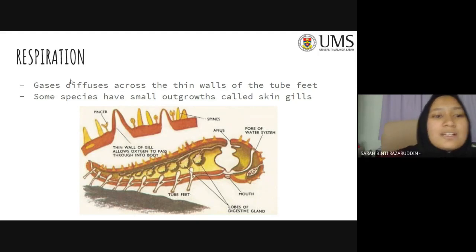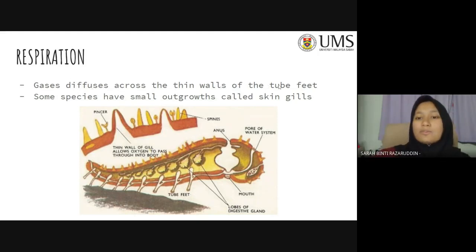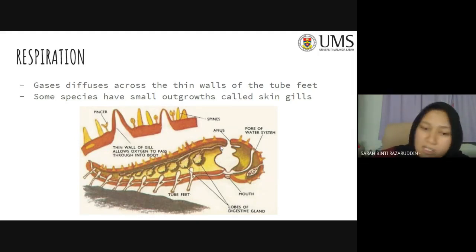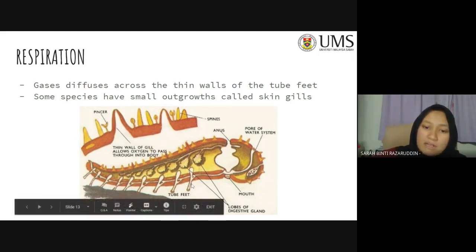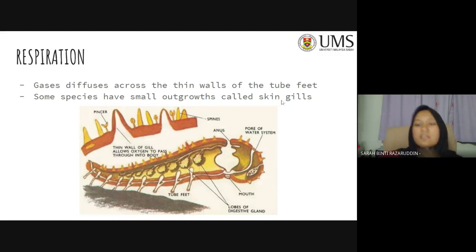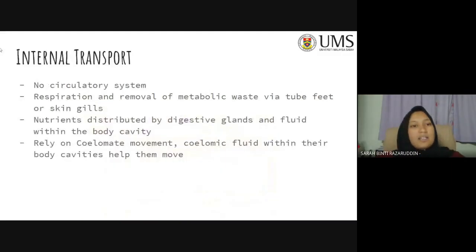For respiration, gases diffuse across the thin walls of the tube feet. Here is an image of a starfish arm showing the tube feet, which assist in respiration. Some species also have small outgrowths called skin gills — not all starfishes have skin gills, but some do.